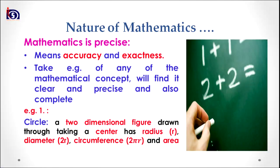There is an example of a circle. A circle can be defined as a two-dimensional figure drawn by taking a center. It has a radius r, a diameter equal to 2r, a circumference expressed as 2πr, and an area expressed as πr².